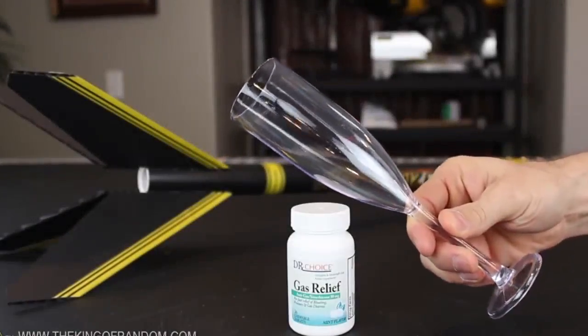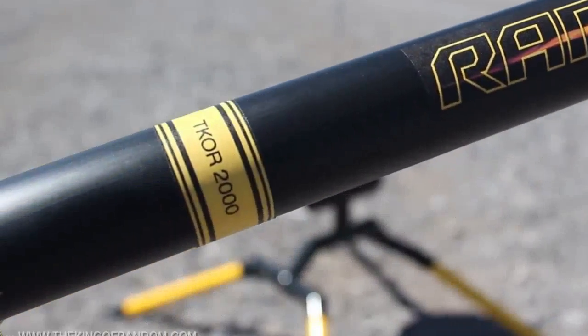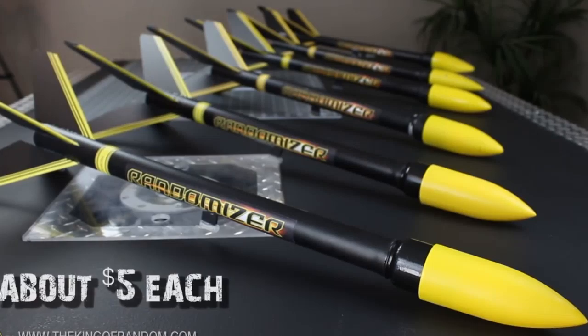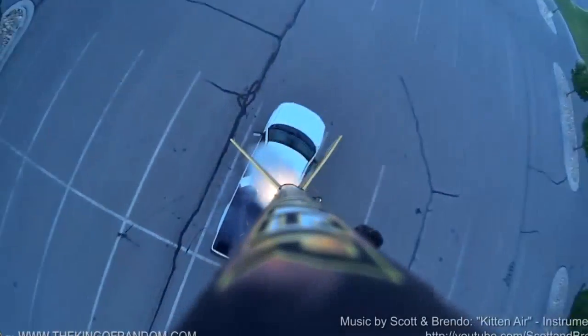Well now you know how to convert a plastic champagne glass, and a handful of other random materials, into a powerful randomizer rocket. And if you try making a whole bunch at the same time, you might be surprised to find out, they only cost you about $5 each. Well that's it for now. If you like this project, perhaps you like some of my others. Check them out at www.thekingofrandom.com